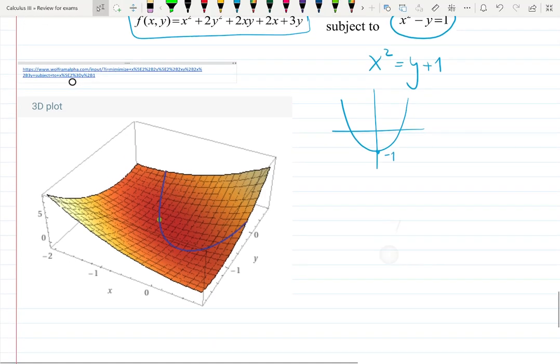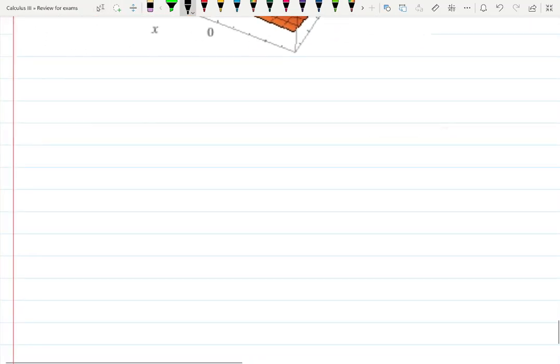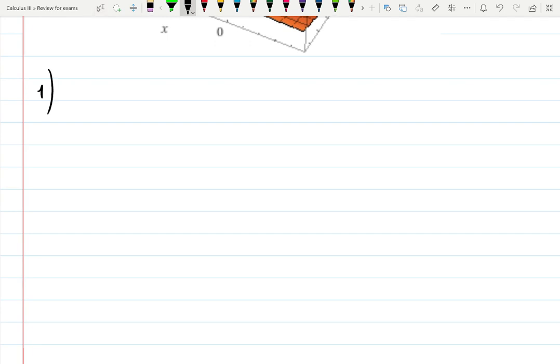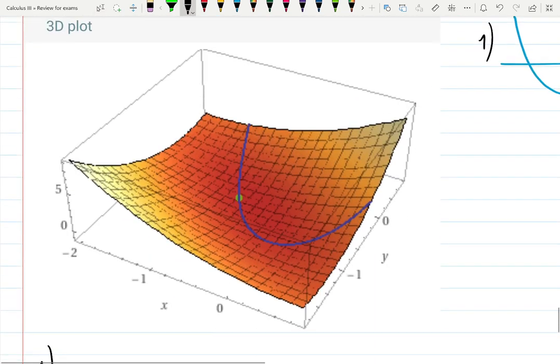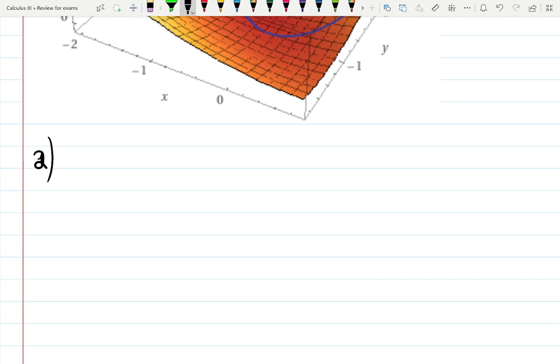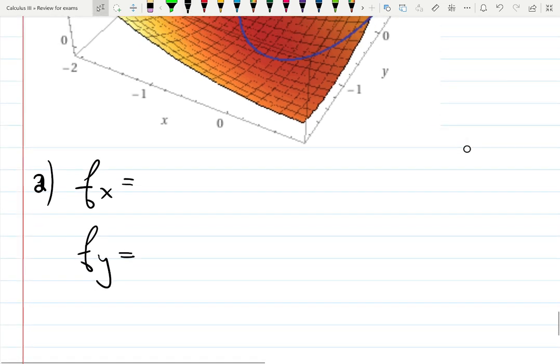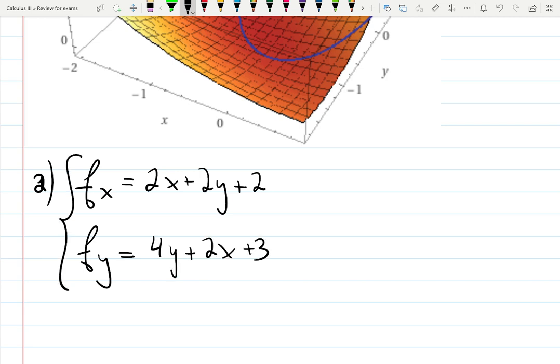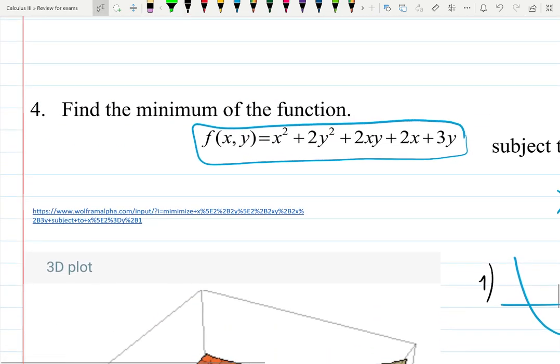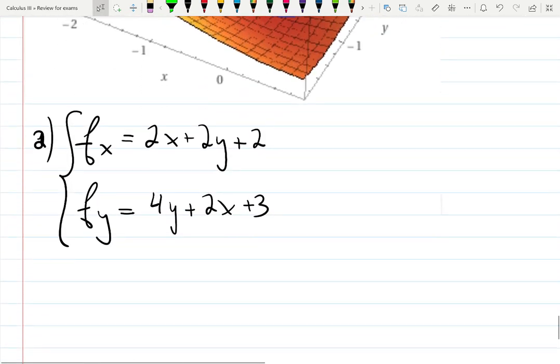Let's do it by hand and get those numbers that WolframAlpha already got in a couple of seconds. You always start with plotting the 2D picture. Now we need to find partial derivatives with respect to x and with respect to y. With respect to x, I will have 2x plus 2y plus 2. With respect to y we'll have 4y plus 2x plus 3.